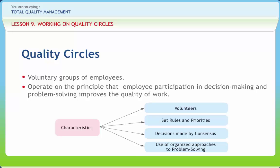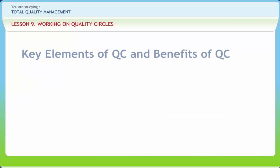The first national convention on Quality Circle was held in India in 1987. The key elements of Quality Circle are: a people-building philosophy — in Quality Circles, people know each other and there is a feeling of togetherness.